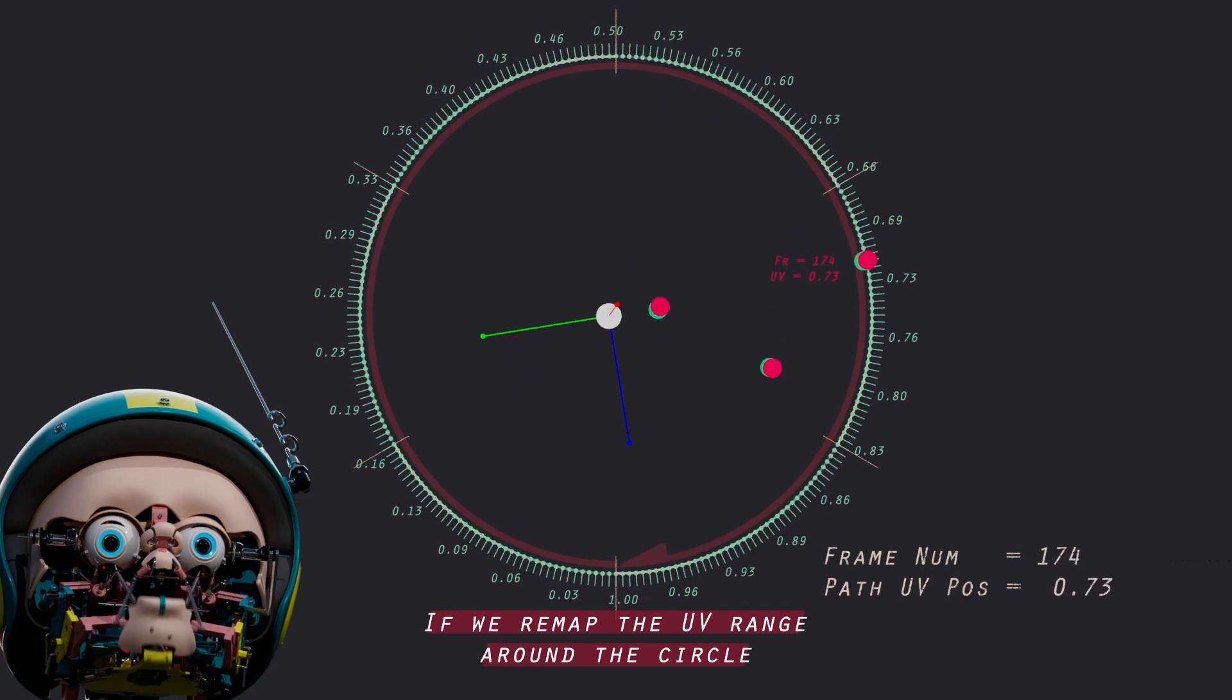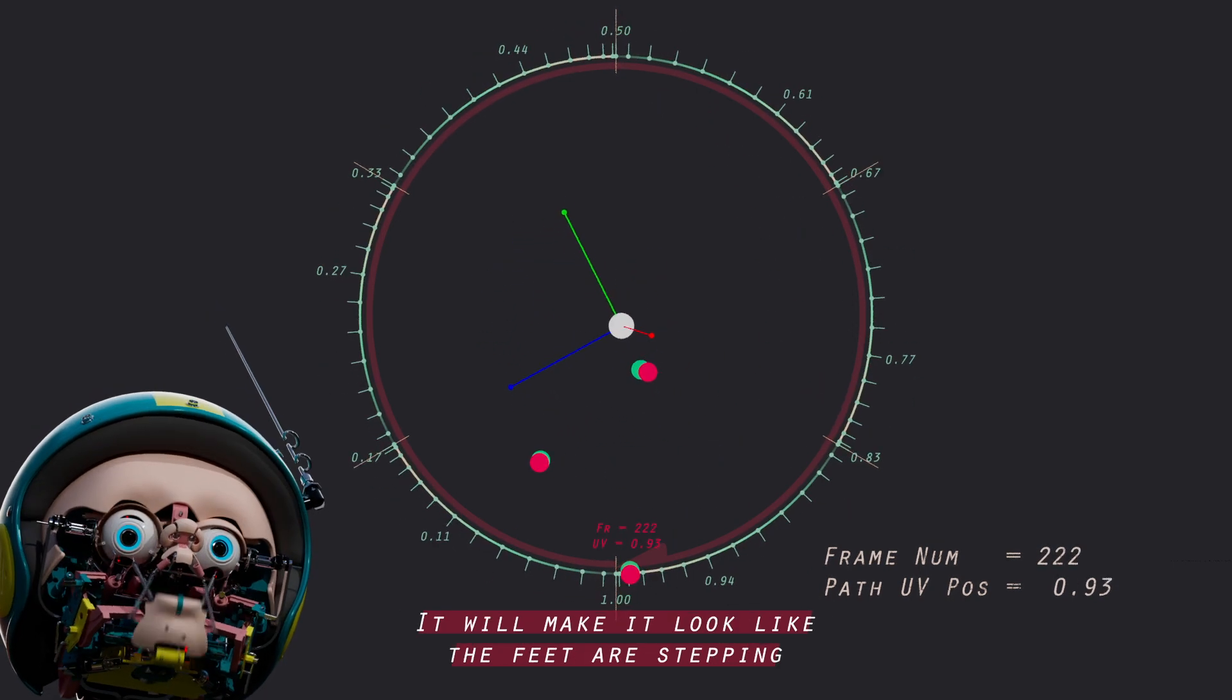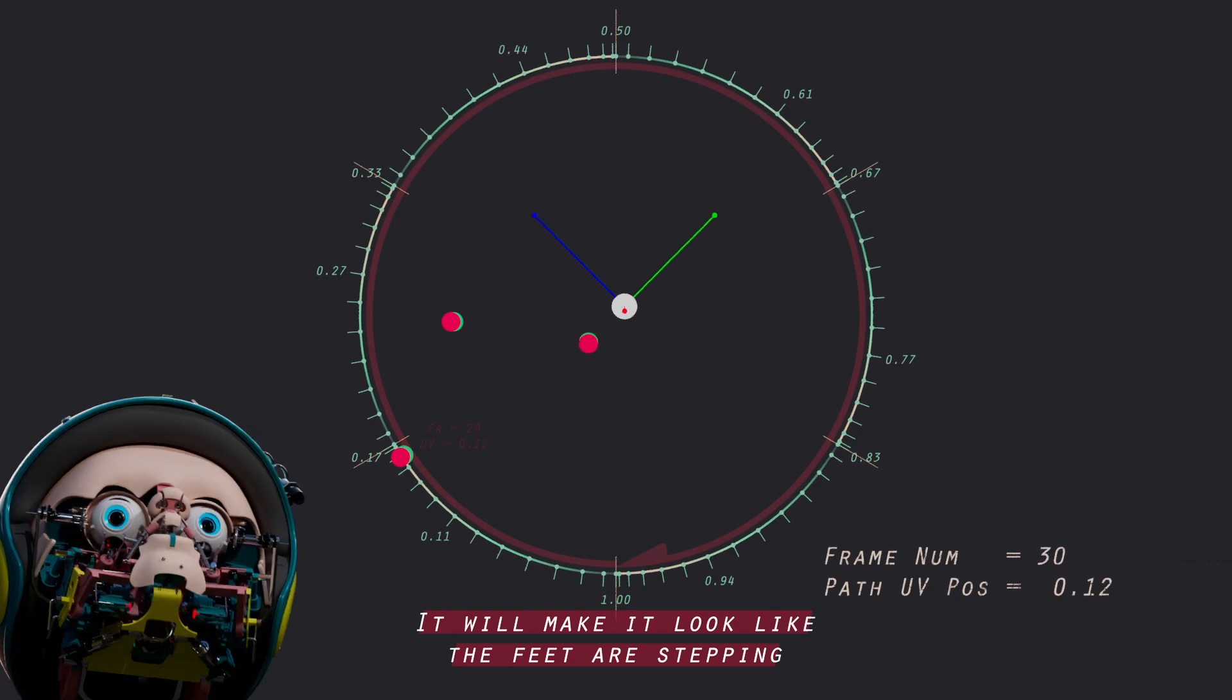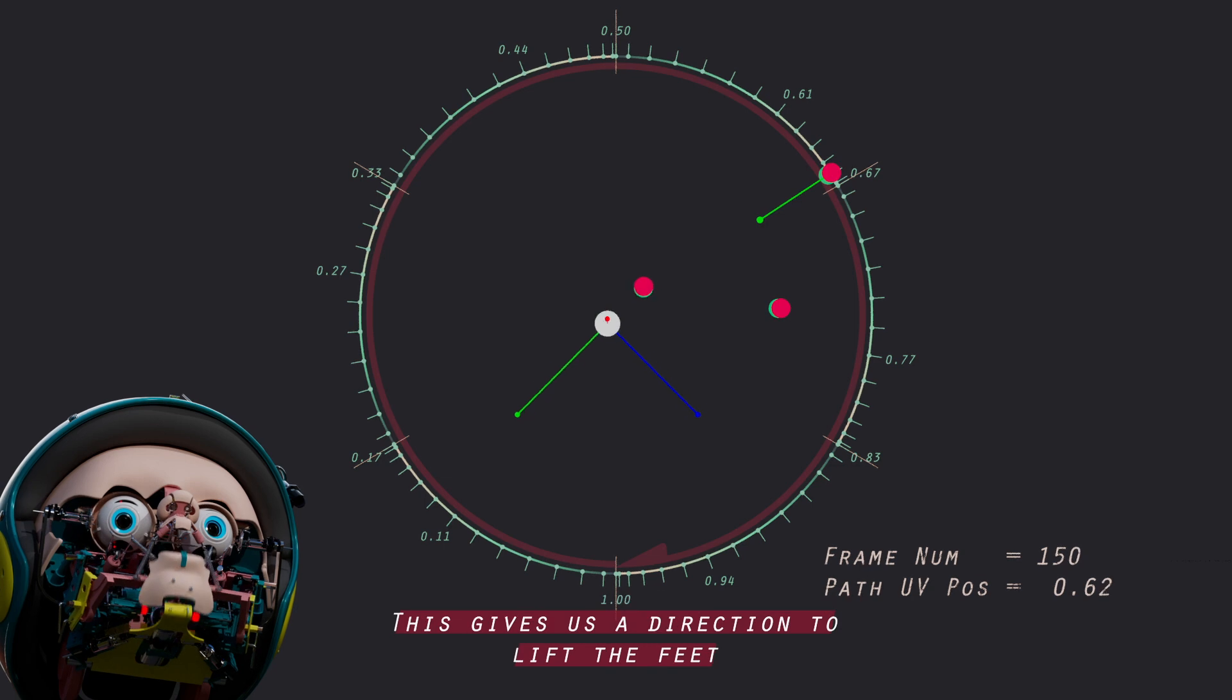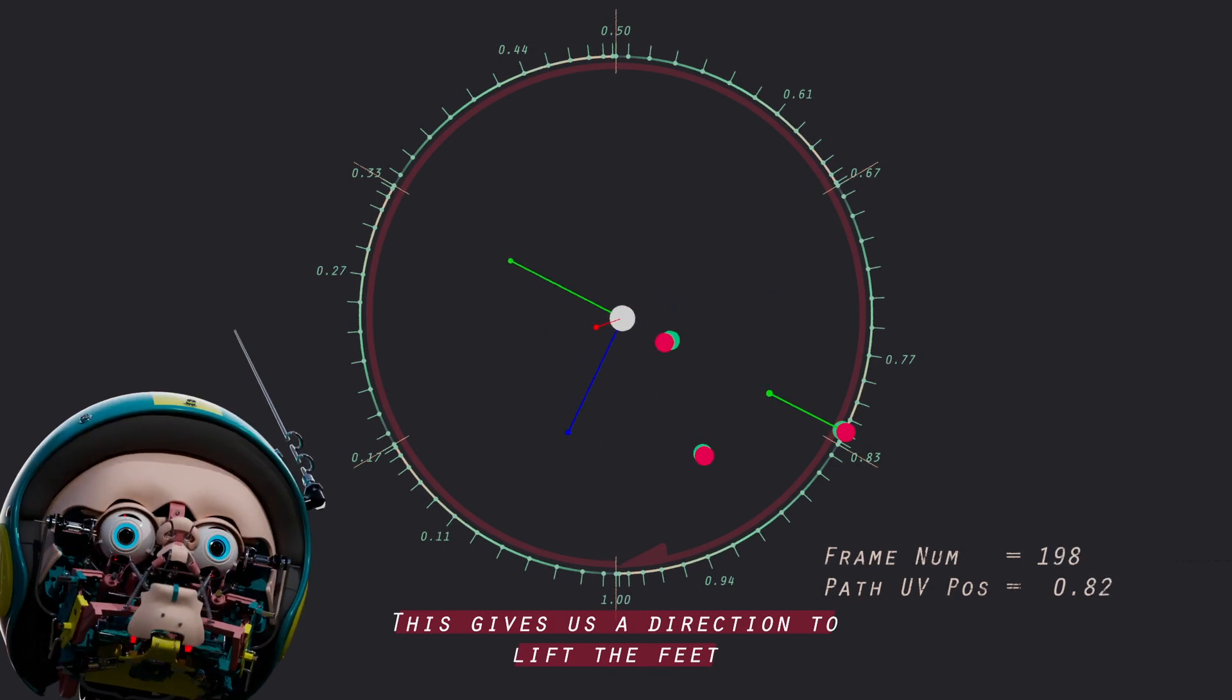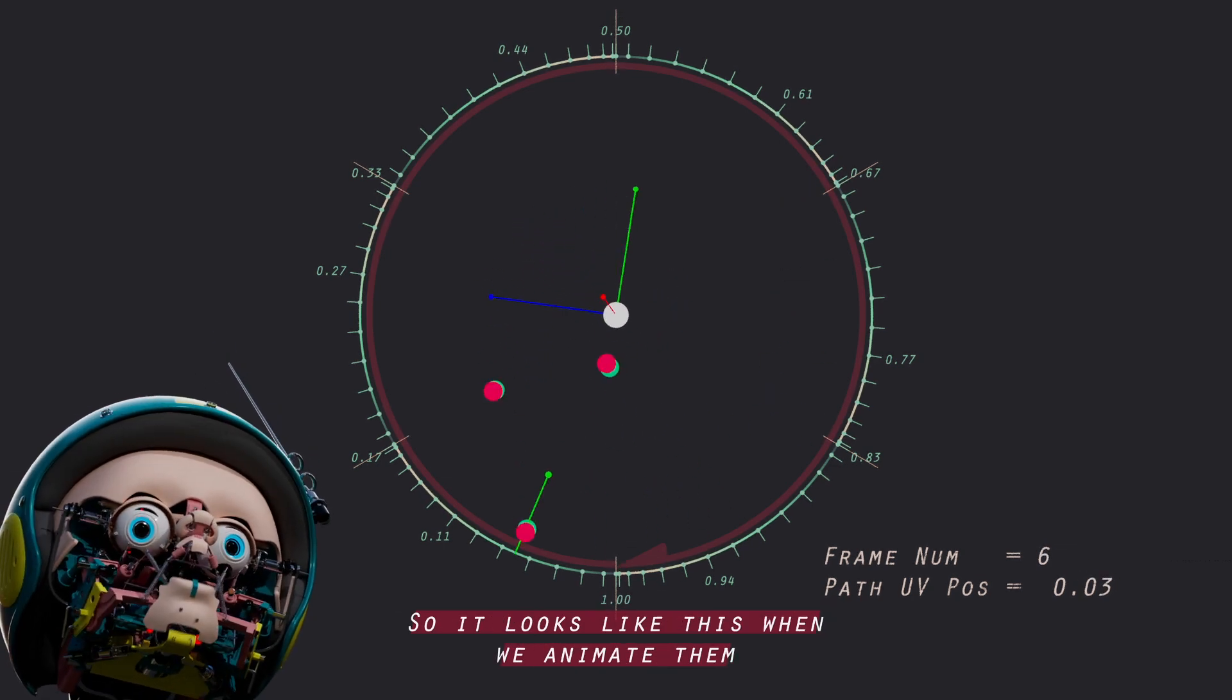If we remap the UV range around the circle, it will make it look like the feet are stepping. Then we can point the y vector of the feet towards the center of the circle. This gives us a direction to lift the feet. So it looks like this when we animate them.